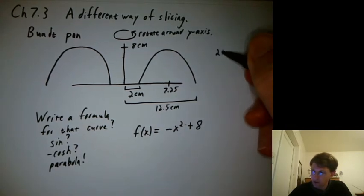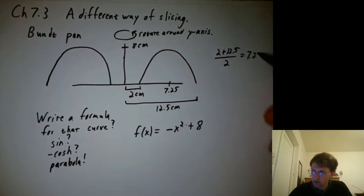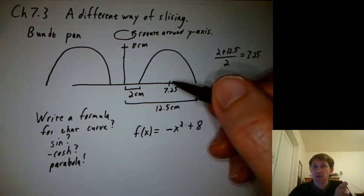So if I did 2 plus 12.5 over 2, I'd get 7.25. So I actually want it to be centered at 7.25.